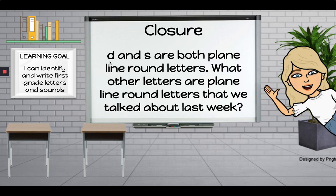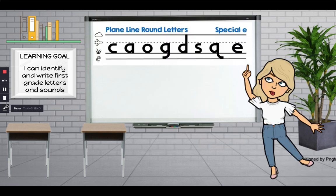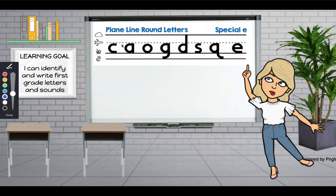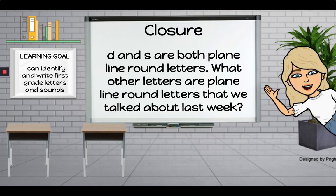We're almost done. The letters D and S are both plain line round letters. What other letters are plain line round letters that we talked about this week? Let me show you all the plain line round letters — there's a lot we've already talked about. We talked about the C, the A, the O, and the G. They're all plain line round letters because we start on the plain line and they have round lines. Good job boys and girls! Keep up the hard work!